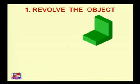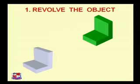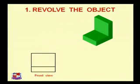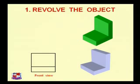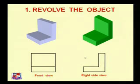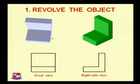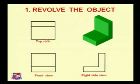In the first method, we revolve the object. Suppose this is an object — we revolve it towards us to get the front view. Second, we revolve the object to the side to get the right-hand side view. Third, we revolve the object upward to get the top view. The person viewing the object remains stationary and fixed, but the object is revolved. This way front view, right-hand side view, and top view are achieved.